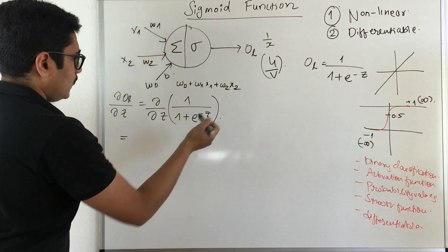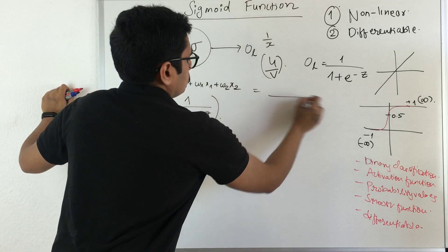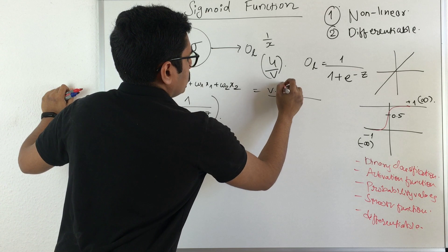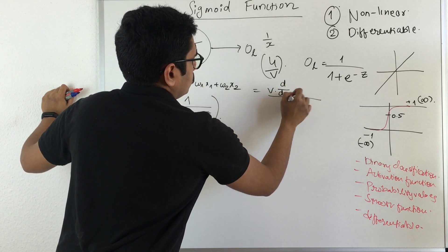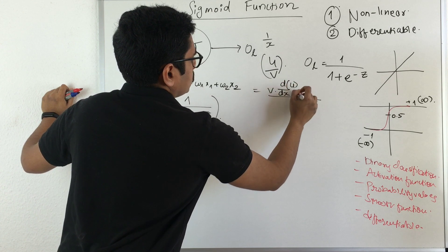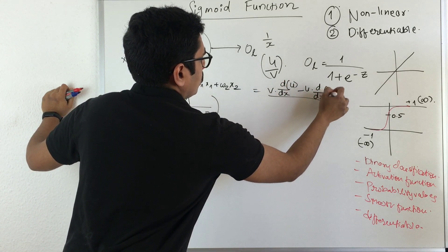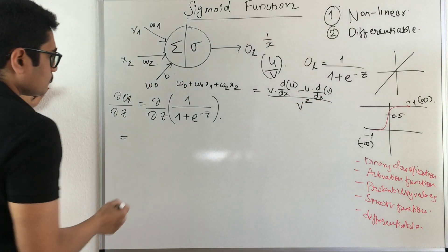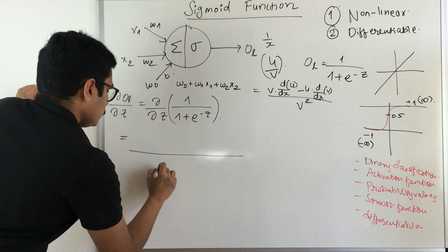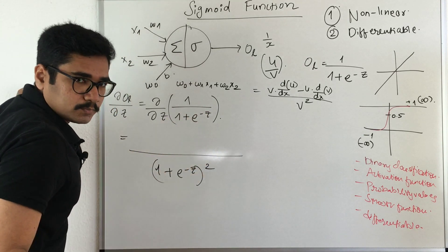What this basically says is: denominator times derivative of numerator—so denominator then derivative of numerator—if you want to differentiate with respect to x, minus numerator times derivative of denominator upon denominator square. It's simple.